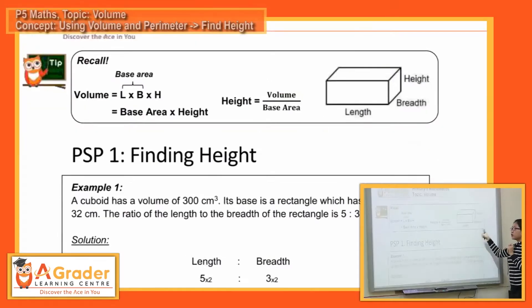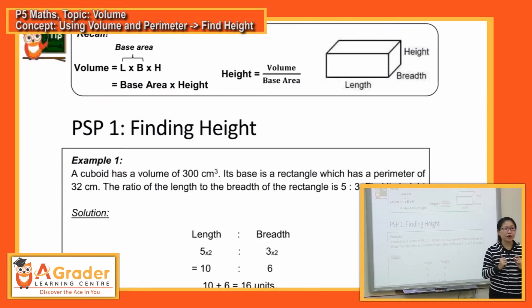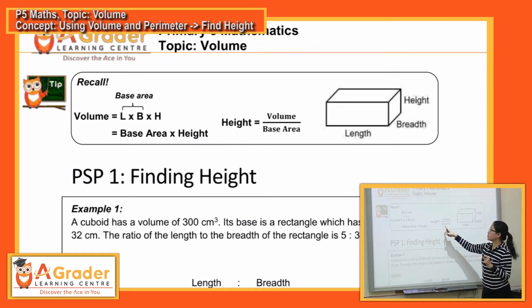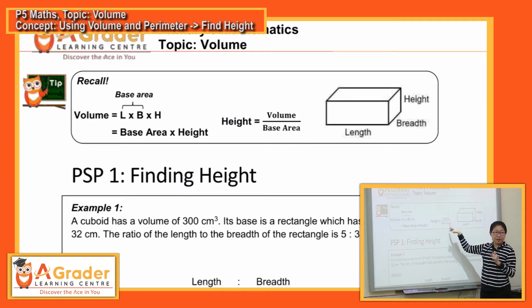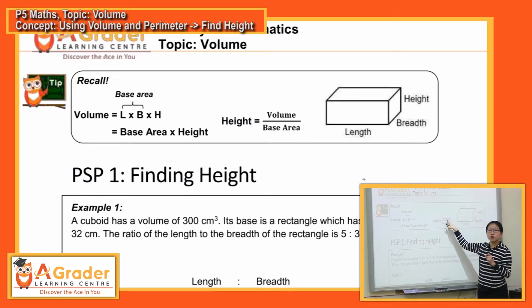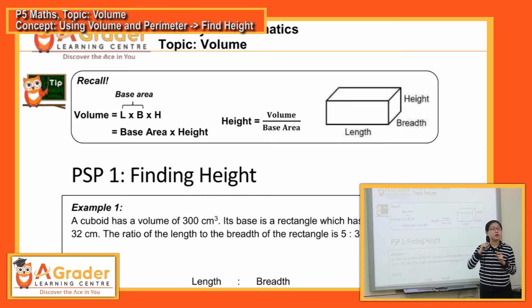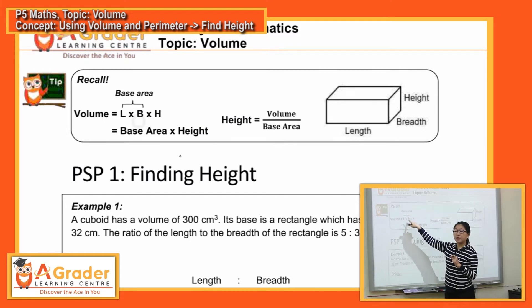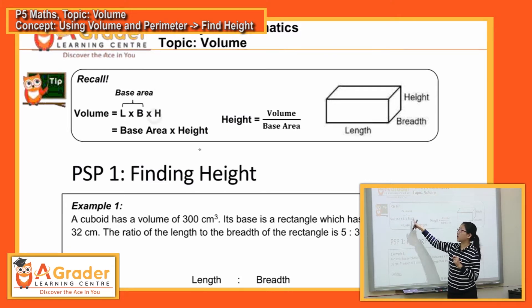So we look at the first PSP, you're supposed to find height, right? Finding height, if we look at the formula, it's supposed to be volume divided by base area. If it's not volume divided by base area, the other one I said is volume divided by length divided by breadth. You will also get height. Understand?